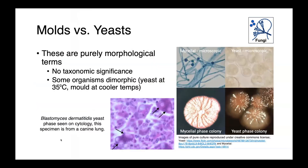Molds versus yeasts are actually purely morphological terms and do not necessarily have any taxonomic significance. Examples where we don't have taxonomic significance are our dimorphic fungi. These are organisms which at elevated temperatures — around body temperature and above 35 degrees Celsius — grow as a yeast, and at cooler temperatures, they grow as a mold.